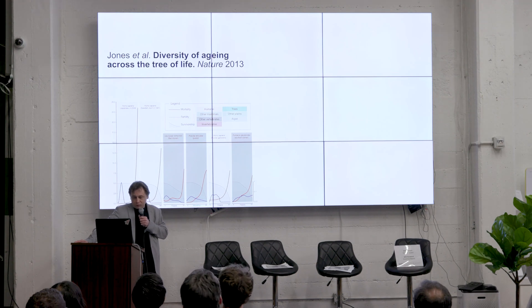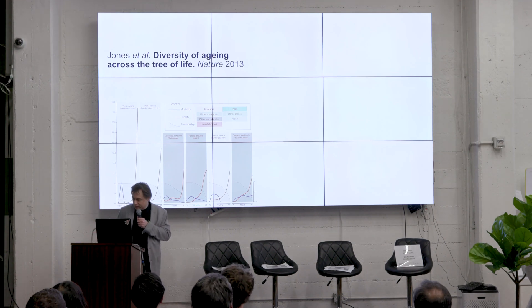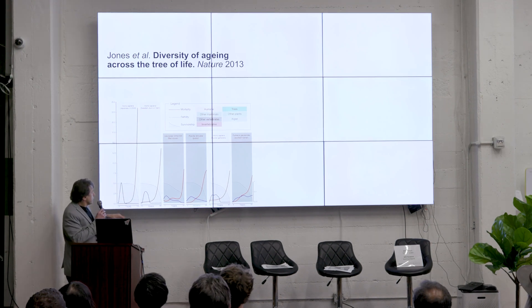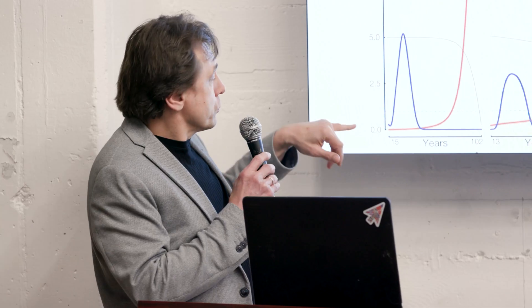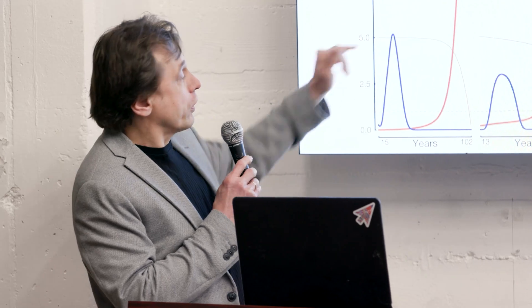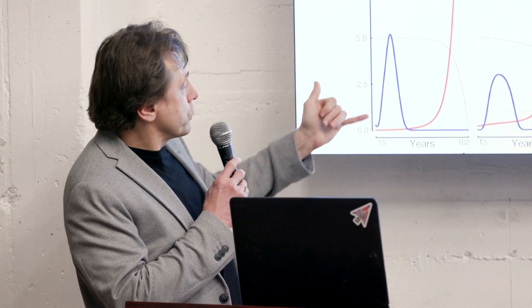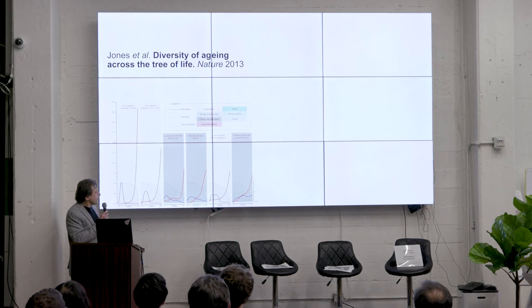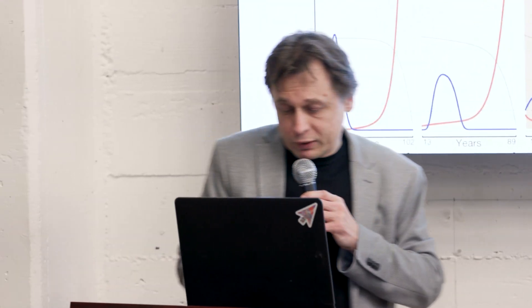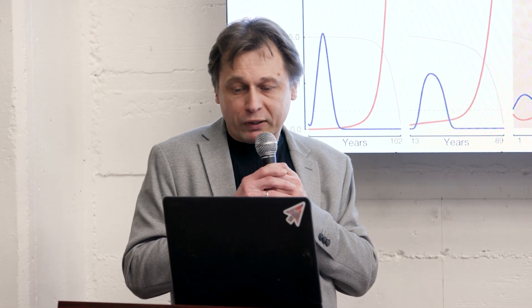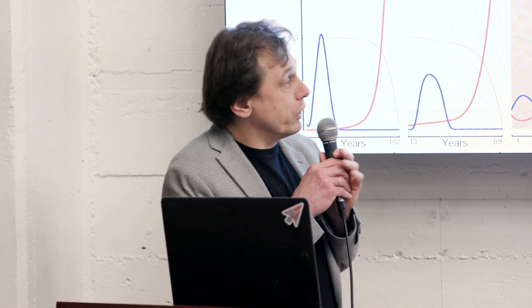This paper basically looks at mortality patterns across species. You can see the human pattern here — red is mortality. When people are young they don't die, and eventually when they're old they die. And reproduction rises then drops. If you look at other species it's more or less the same, but when we look across species more broadly, we find very strange and very different patterns.